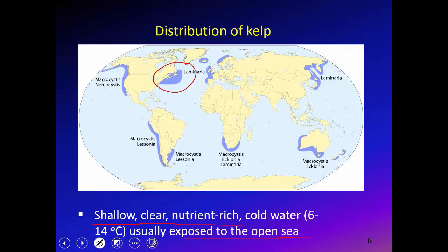Looking at the distribution, we see Laminaria off the coast of Maine and further north. On the West Coast, Macrocystis is found from Alaska all the way down to Mexico, because nutrients are high there due to upwelling and the continental shelf drops off rapidly, creating a broad range of suitable shallow habitat. The key environmental requirements are high nutrients, clear water, and shallow water.